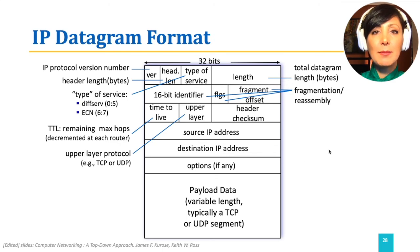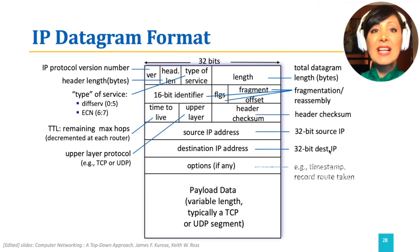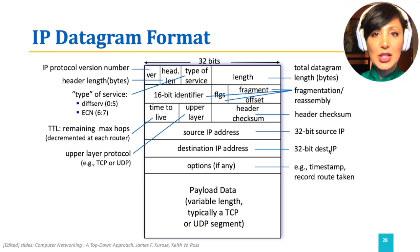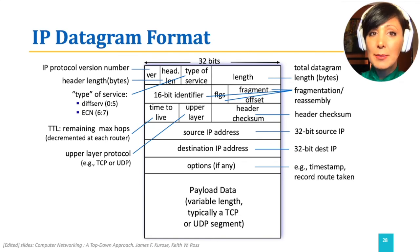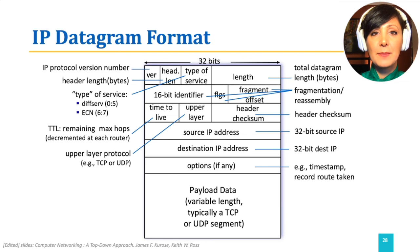The header checksum, known as the Internet checksum, is used for error detection at the routers. Source and destination IP addresses are used for addressing purposes. An option field is available to allow the IP header to be extended to include additional required information.